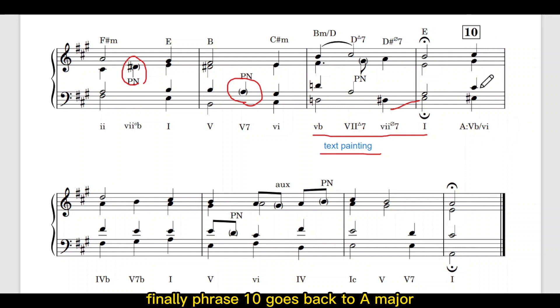Finally, phrase 10 goes back to A major. Begin with a secondary dominant 5B of 6 resolves to 4B and then at the end the chorale wrapped up with a 1C571. Now let's listen to it.